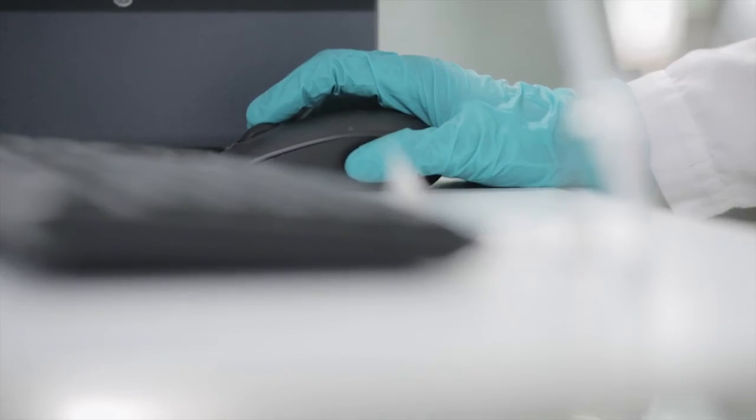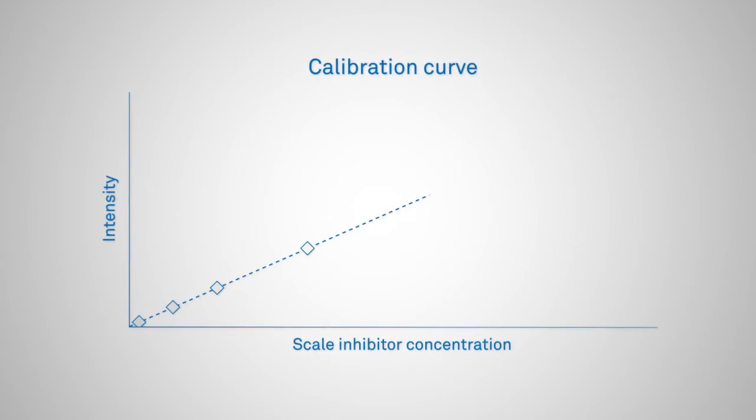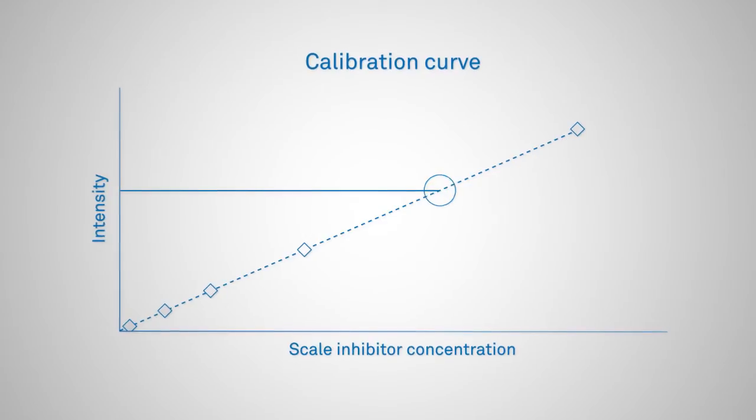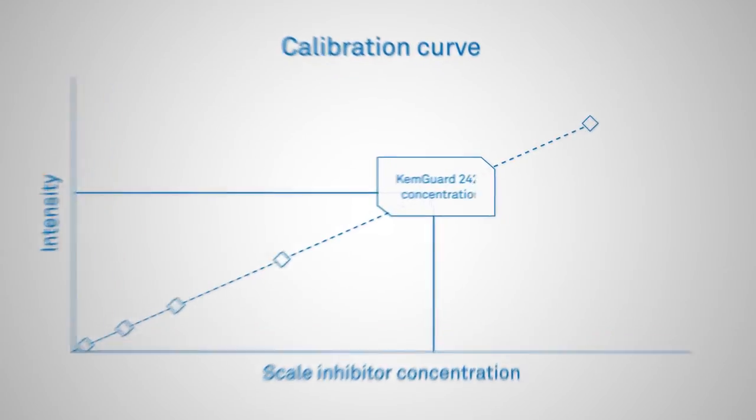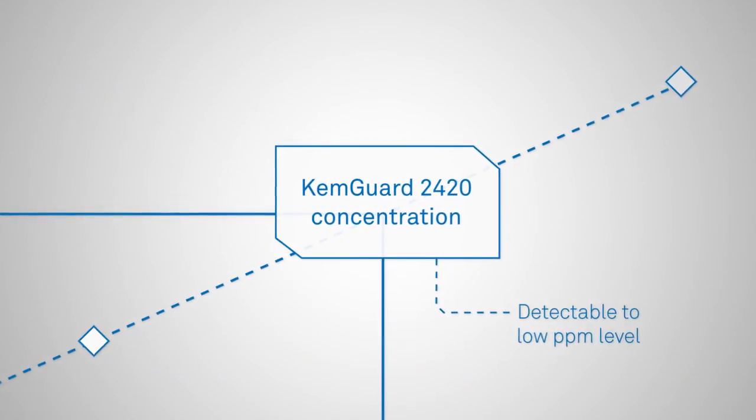Testing residual inhibitor levels is typically a complicated process that is normally done in onshore laboratories. The fluorescent tags of ChemGuard can be tested on the platform within a matter of hours using a simple spectrofluorometer.